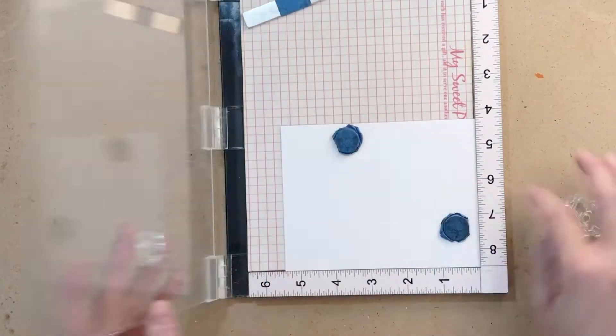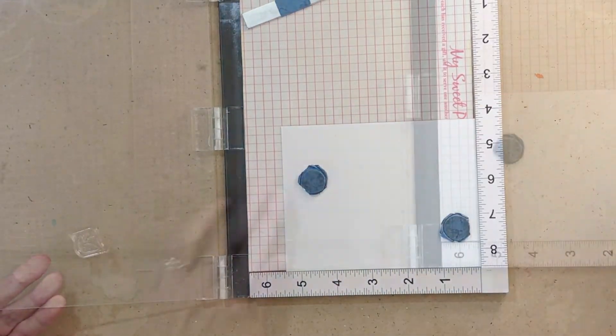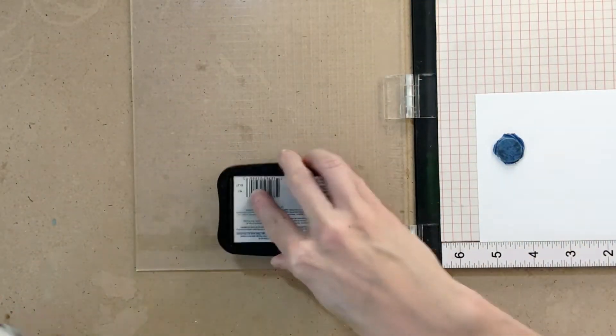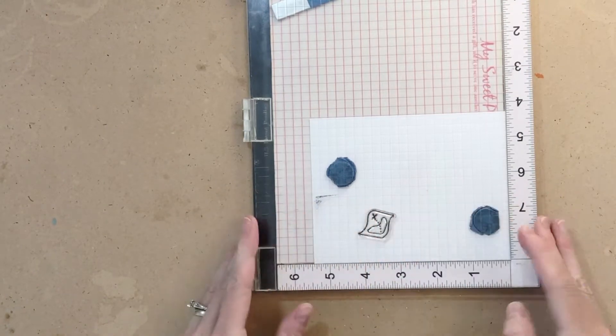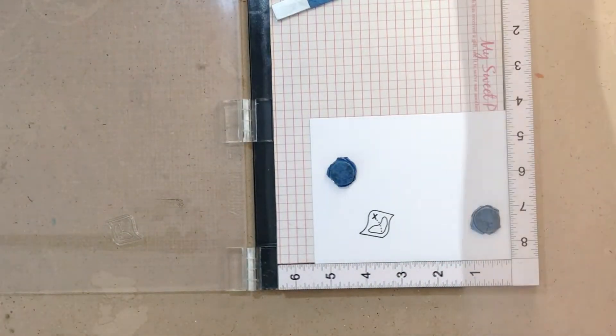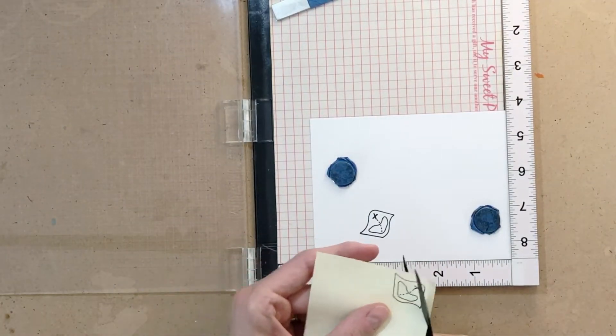Now I have my map in the right spot for this A2 panel of 110lb white cardstock. I just inked up that map and stamped it in Memento Tuxedo Black.